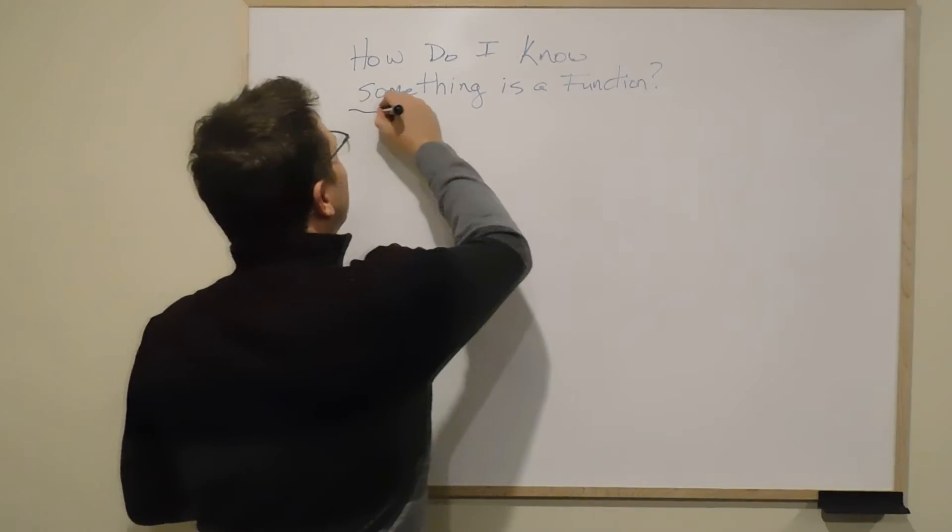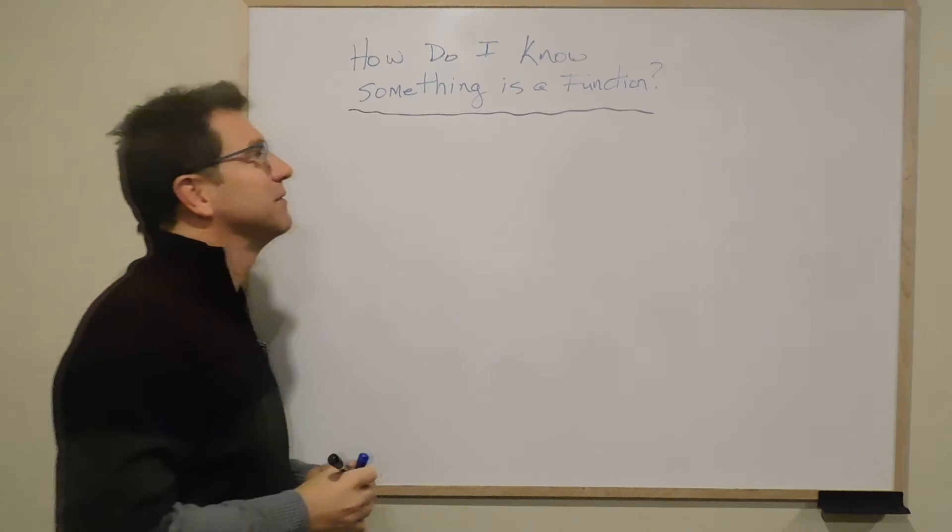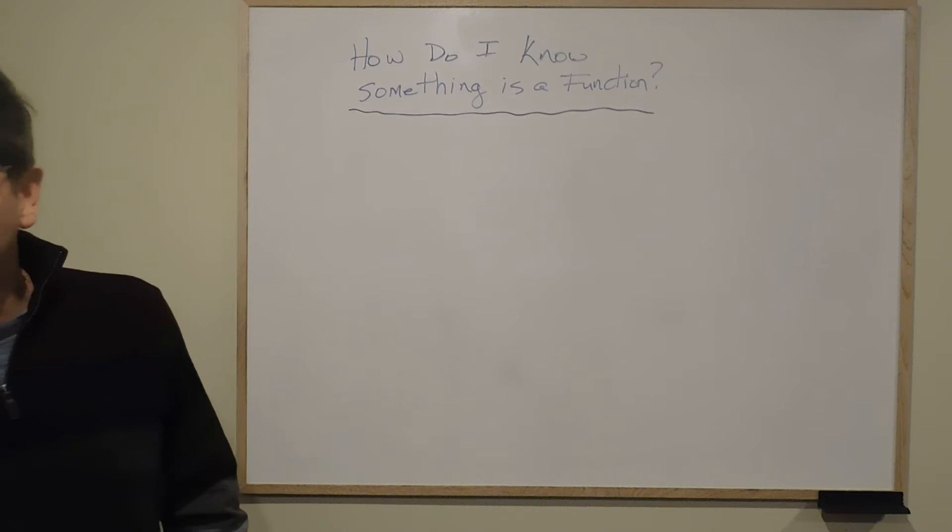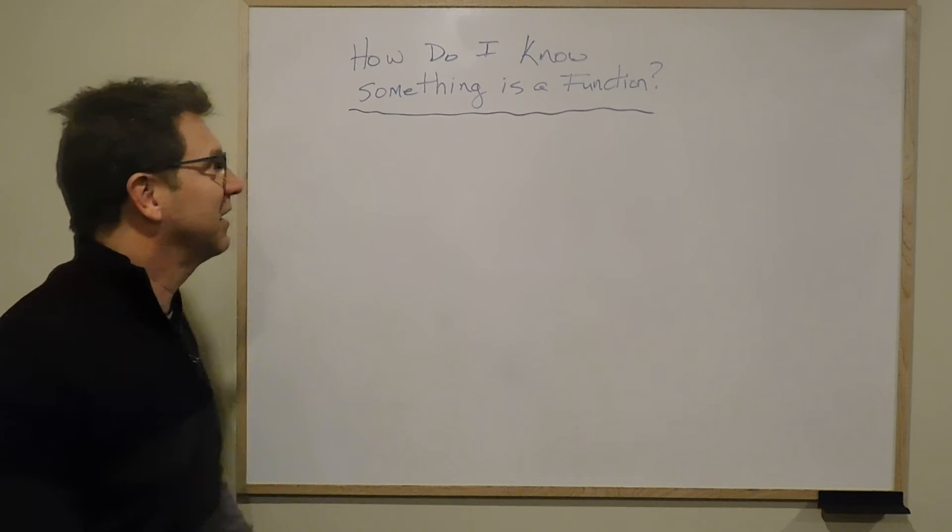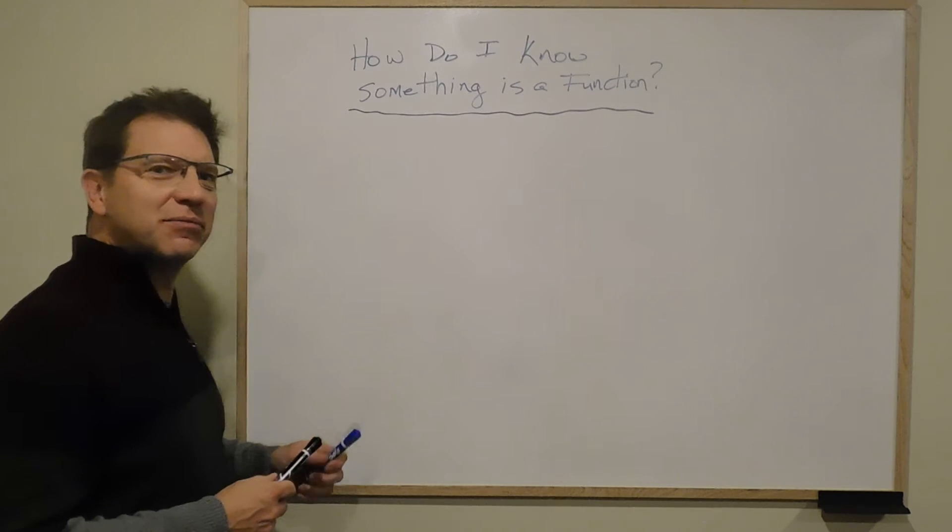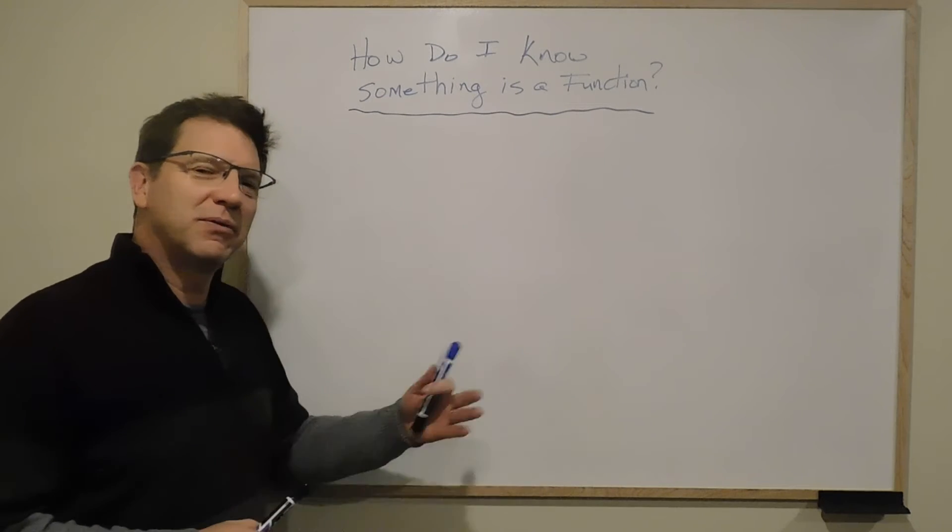How do I know that something is a function? If I read right off the slide, it says a relation is a function if each x value corresponds to exactly one y value, which brings up the question, what's a relation? So a relation is any connection between two variables, between x and y.